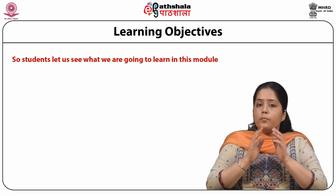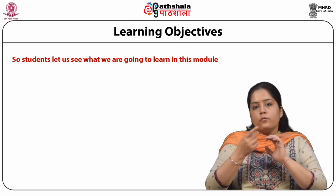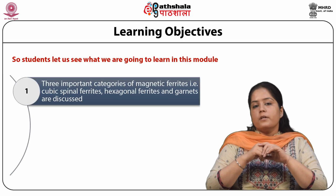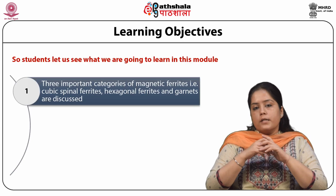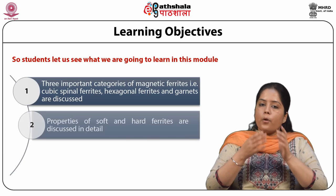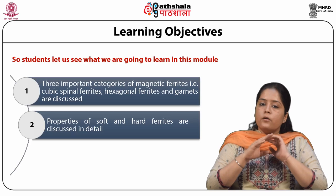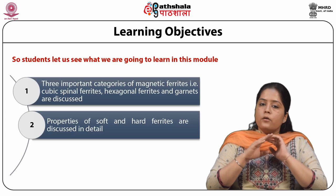Let us discuss the main points covered in this module. First, the three important categories of magnetic ferrites — Cubic Spinel Ferrites, Hexagonal Ferrites, and Garnets — are discussed. Second, properties of soft and hard ferrites are discussed in detail. Third, various applications of magnetic ceramics will be explained.